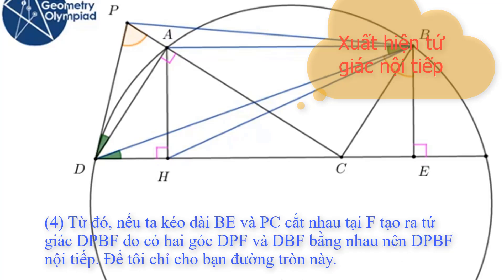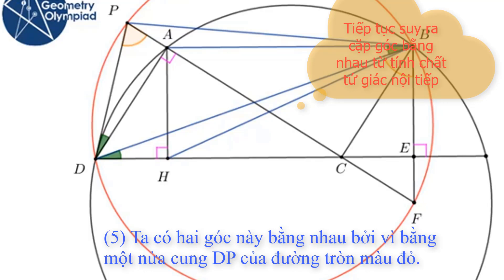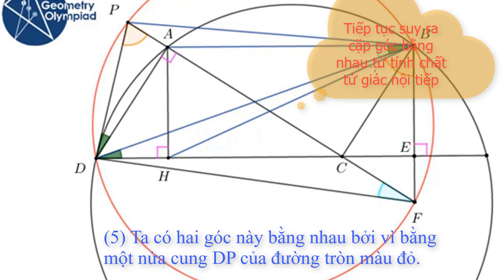This proves that if I continue line BE and line PC, I will have a cyclic quadrilateral. Because these two angles are equal, DPBF is cyclic. This circle shows these two angles are equal because both of them are half the arc PD in this red circle.